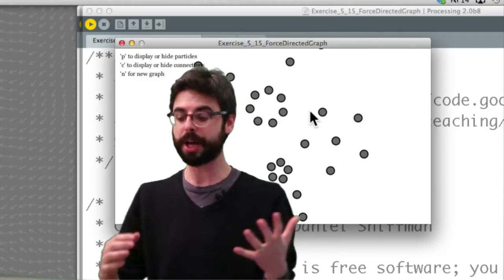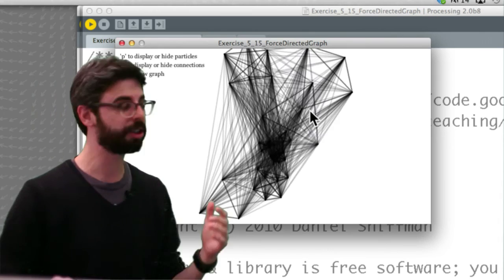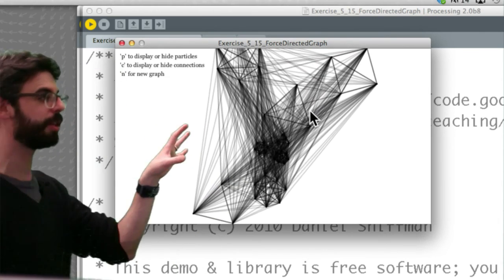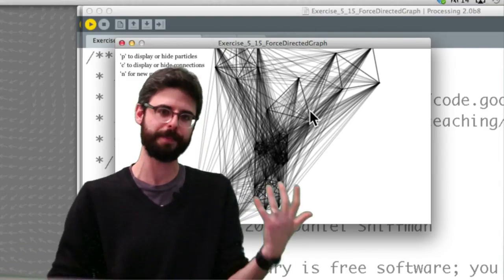One is: design a creature or entity, use springs and particles to be the skeleton for that creature. Another idea is to use this example as a model for building a force-directed graph.